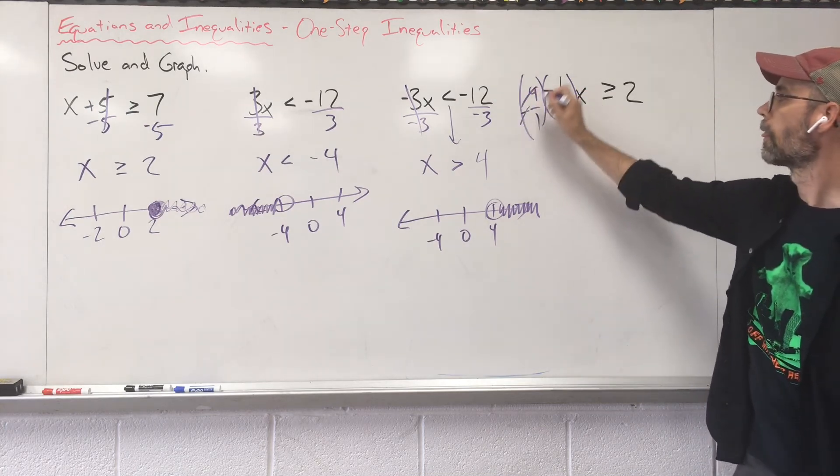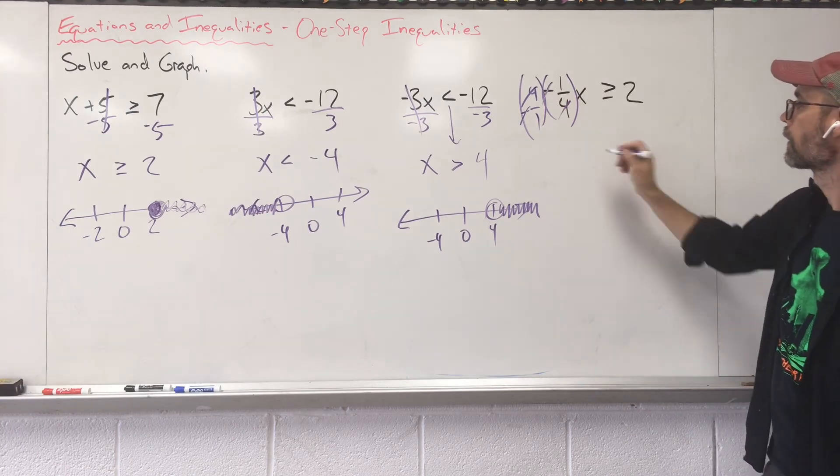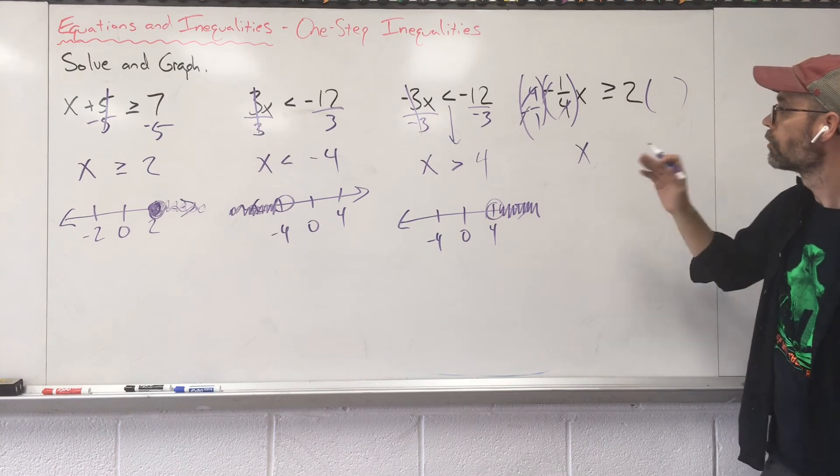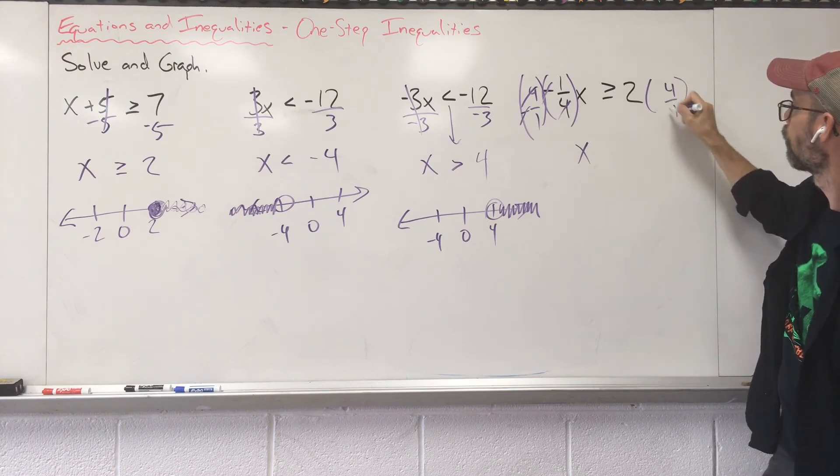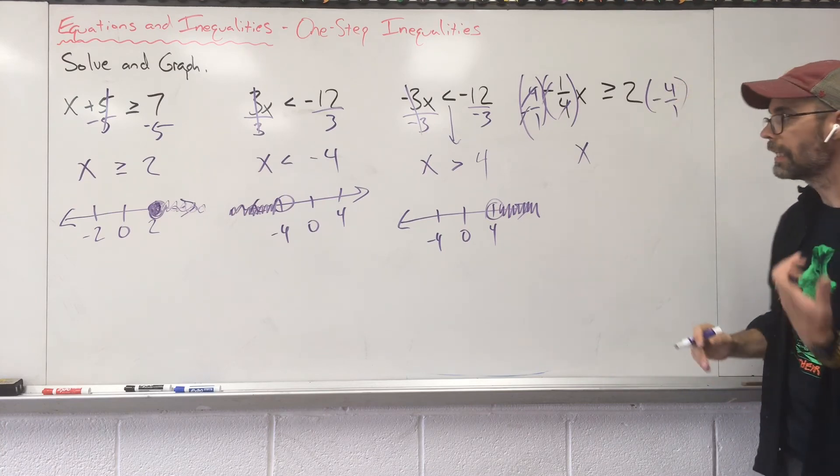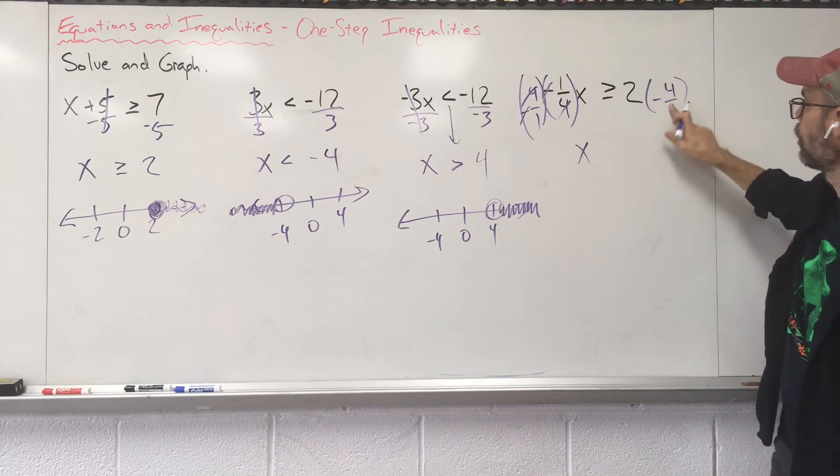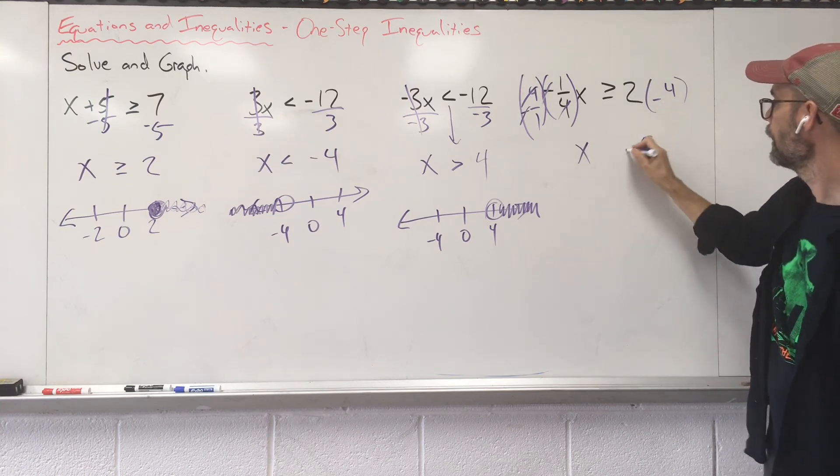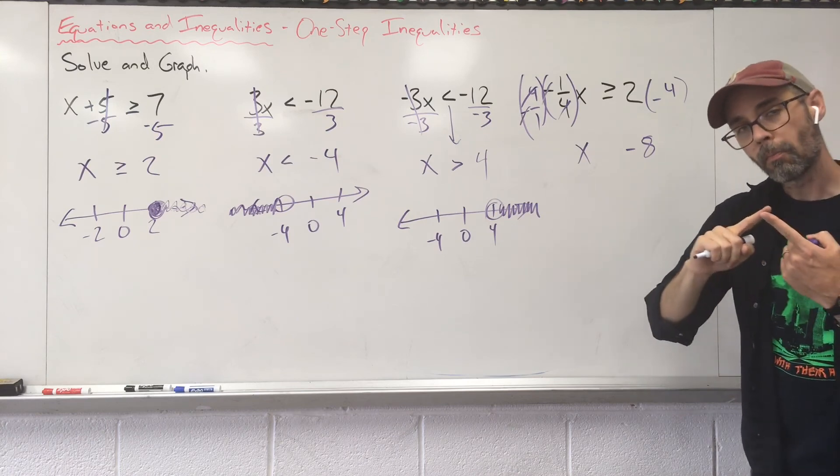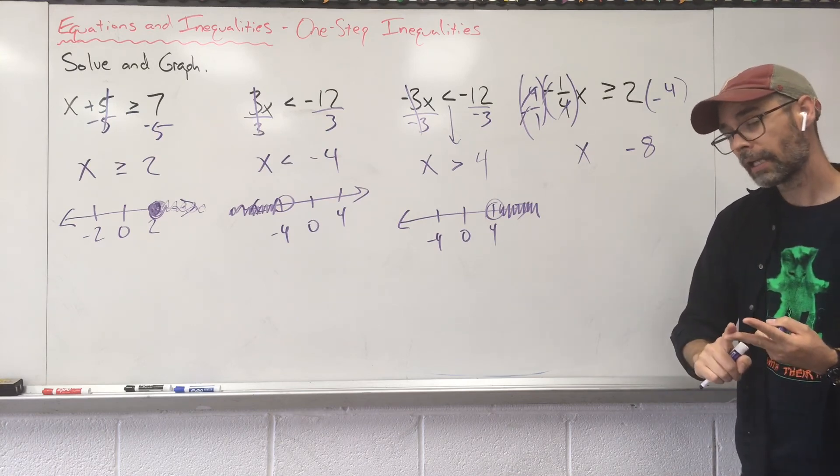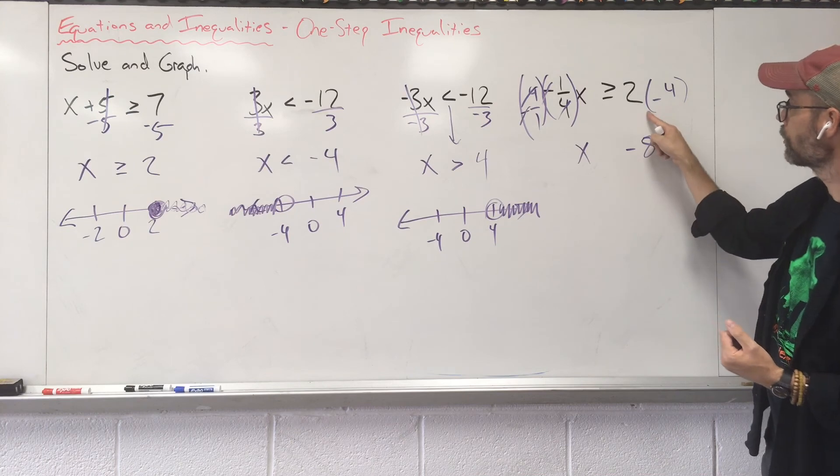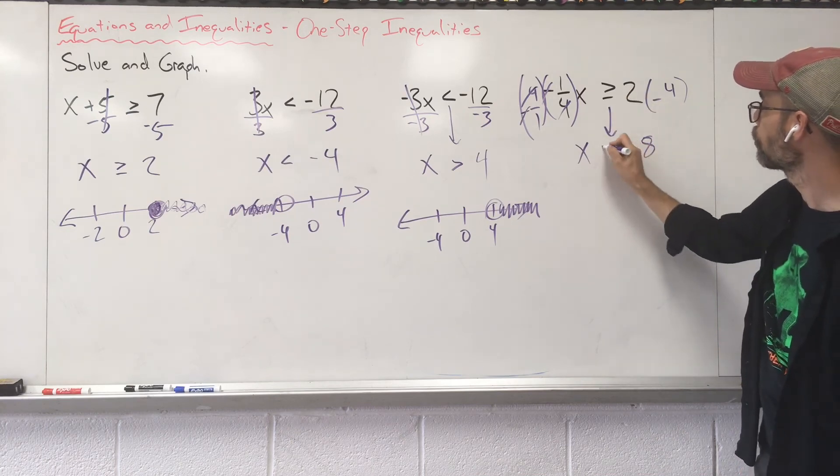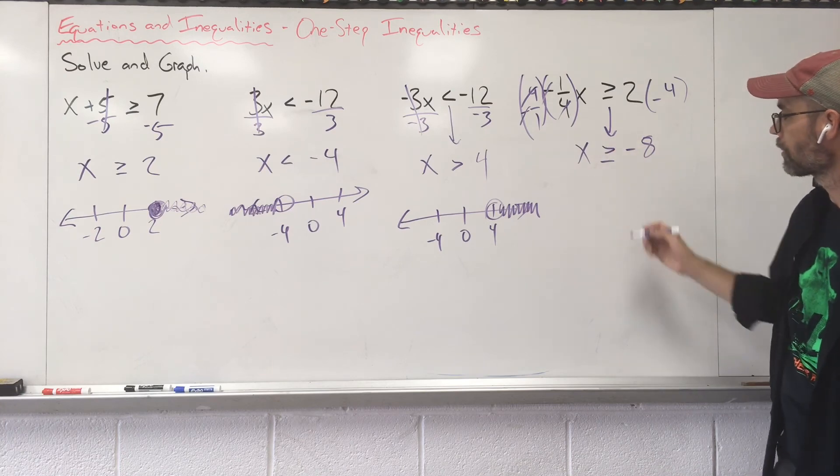Those 4's cancel, the negatives cancel. I'm left with just x. Got to do it to the other side as well. So we have 4 over 1 negative. Do I really even need that over 1? Nope, let's ignore it. 2 times 4 is 8 negative. Did I just multiply or divide by a negative number? I multiplied by a negative. Yes. When that happens, flip the inequality. It goes the other direction.